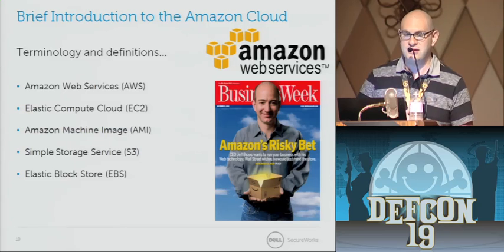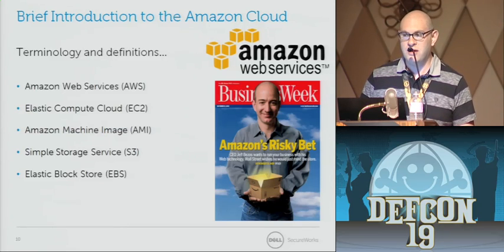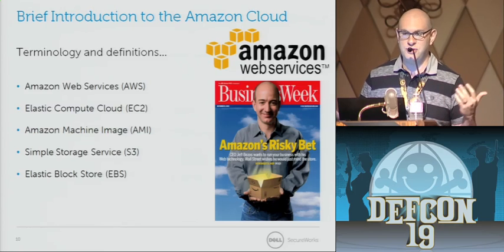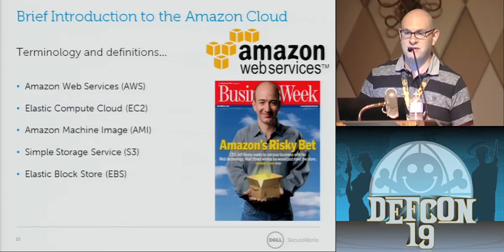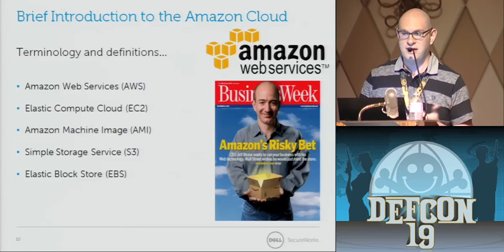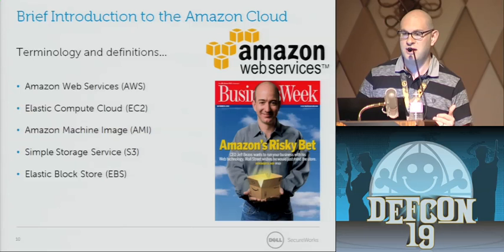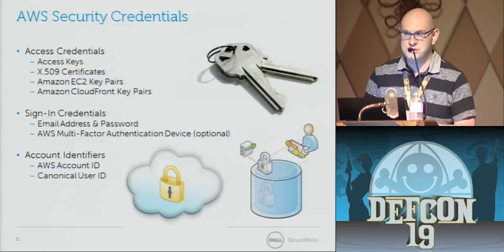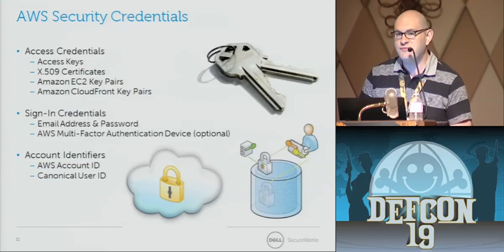EC2 is their Elastic Compute Cloud — it's essentially infrastructure as a service where you get shared compute, storage, and network. An AMI, or Amazon Machine Image, is essentially a virtual appliance container format. You pick an Amazon Machine Image and can launch any number of instances of that image, and those become virtual machines running in the EC2 cloud.